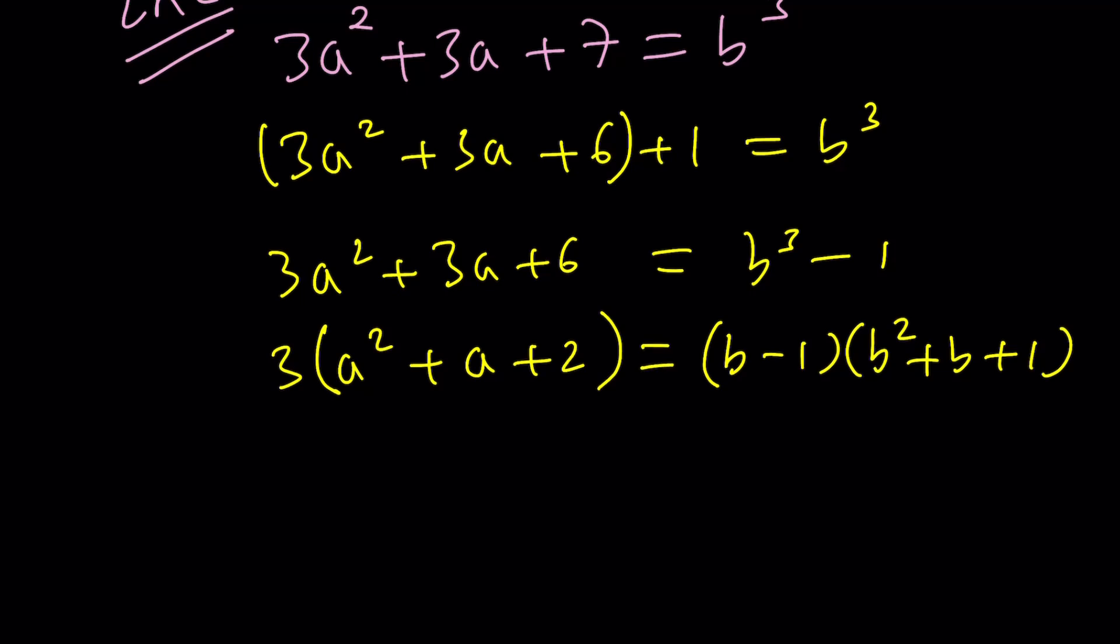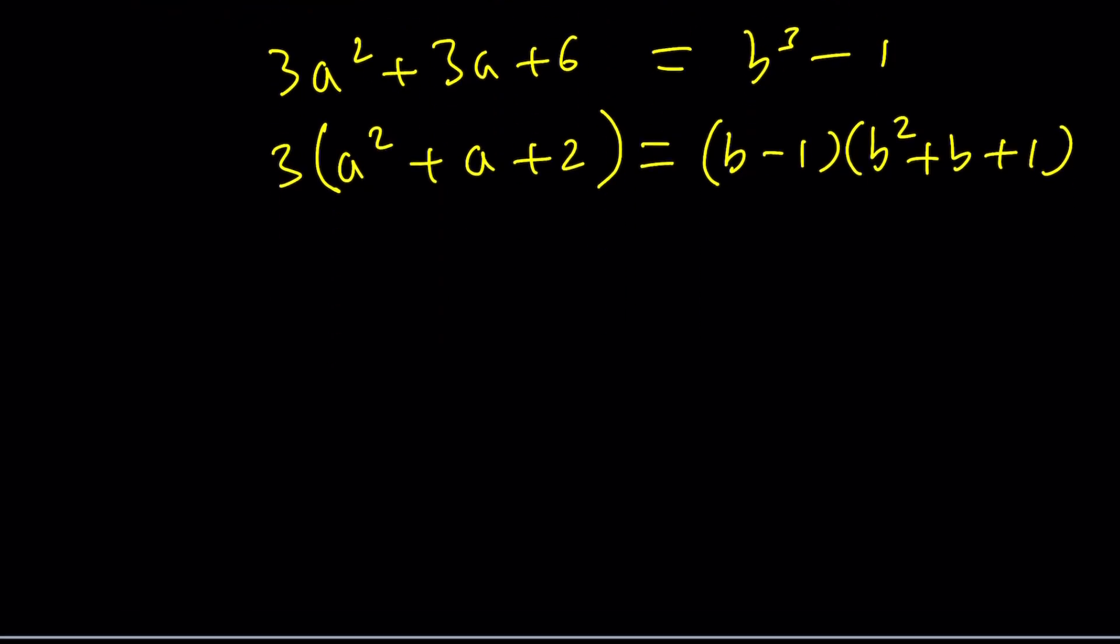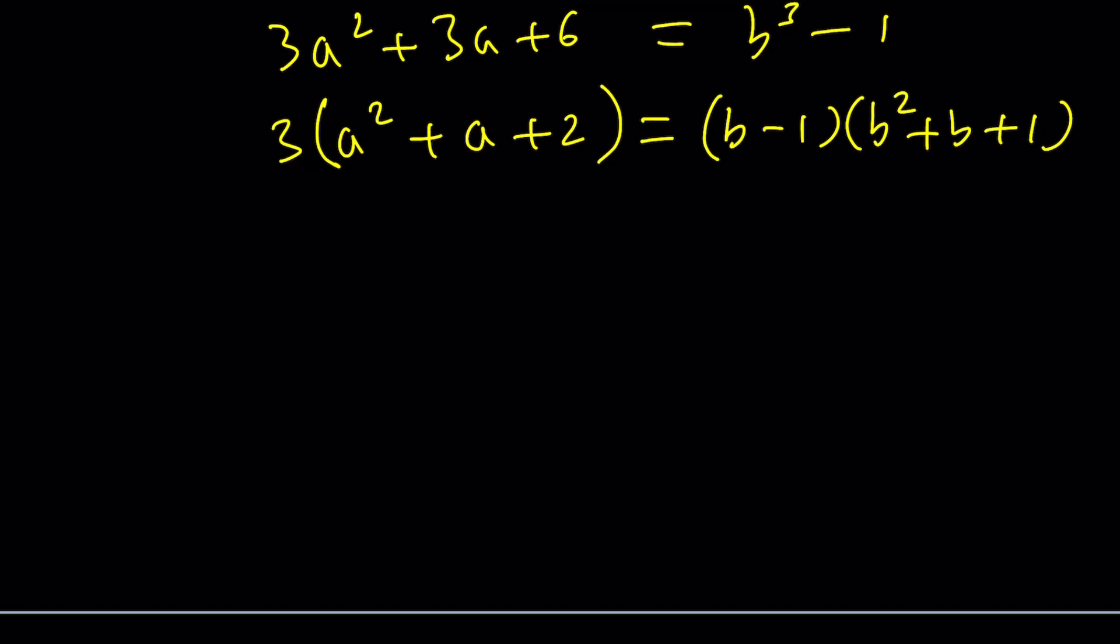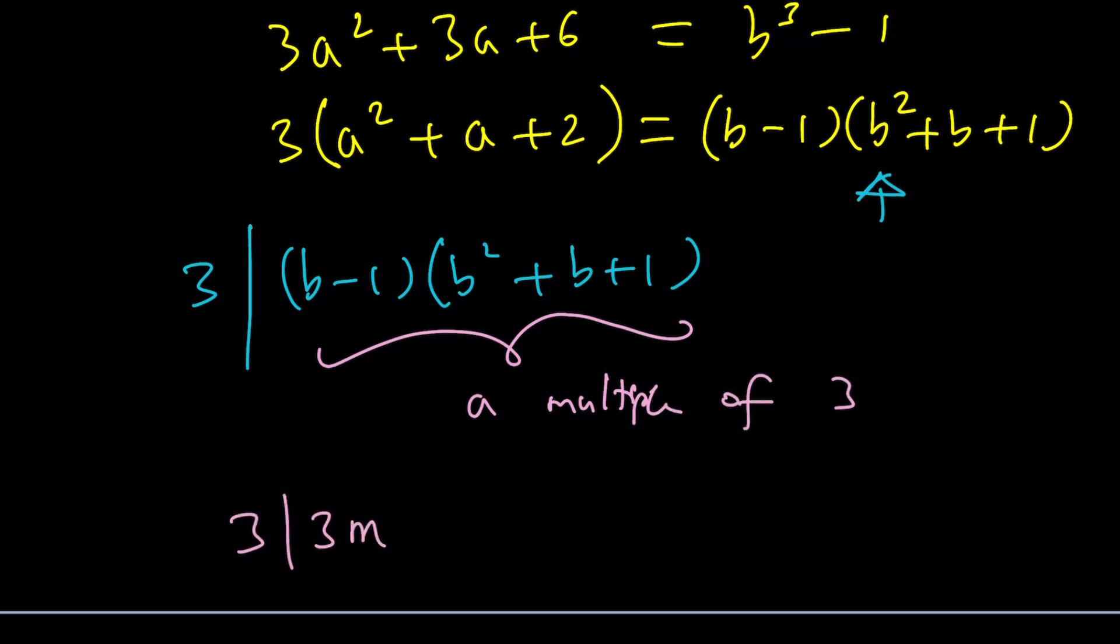Great. Now what does this mean? We have a multiple of 3, and that is equal to this product right here. So this basically means that 3 divides this product. I hope you are familiar with this notation. If not, this just means that this thing here is a multiple of 3. In other words, 3 divides a multiple of 3. Make sense? 3 always divides 3m.